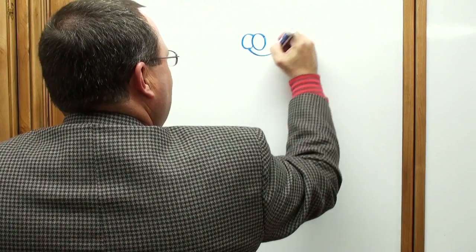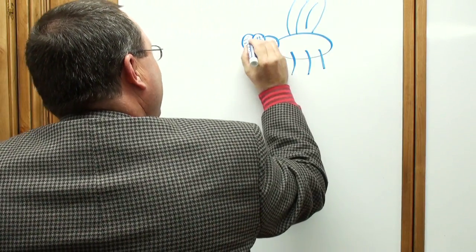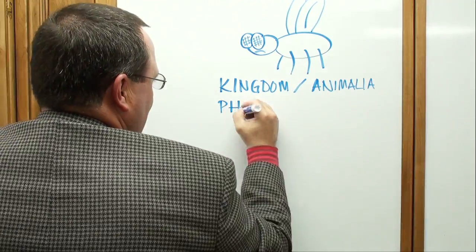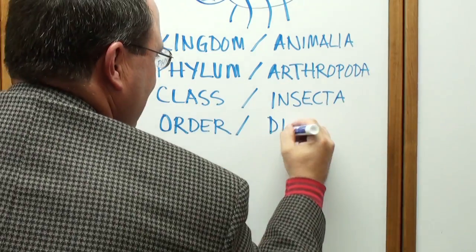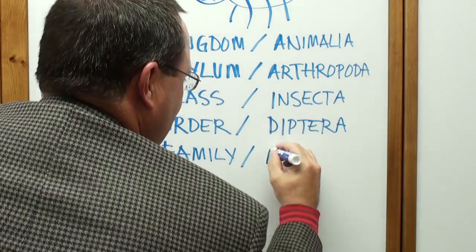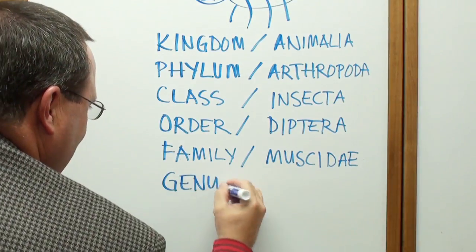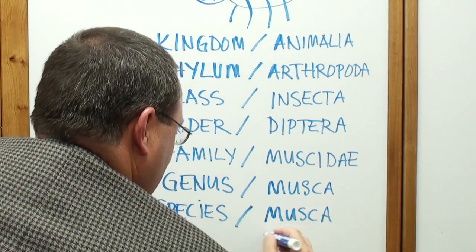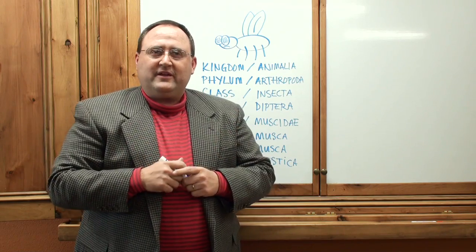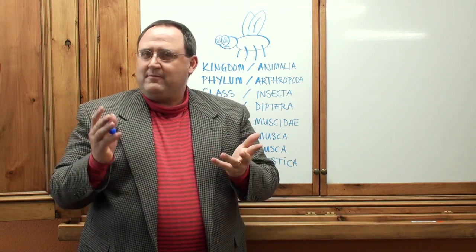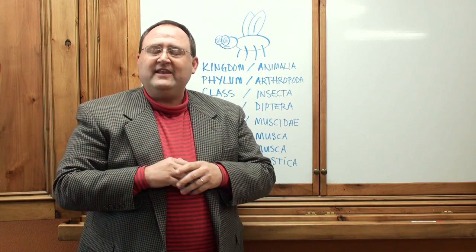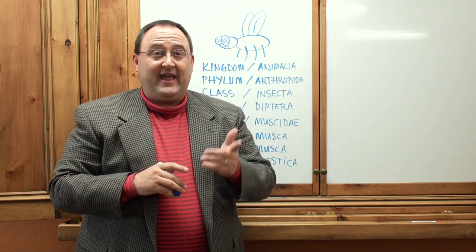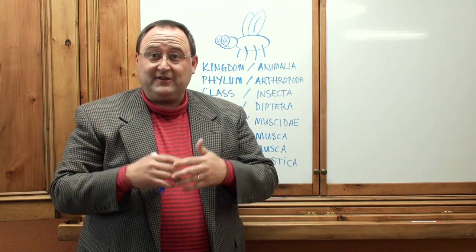Humans have always felt the need to categorize things. For instance, there are a series of complicated classifications for the common housefly. Their kingdom is Animalia, phylum Arthropoda, class Insecta, order Diptera, family Muscidi, genus Musca, and species Musca domestica. A lot of work went into classifying and categorizing an insect that for the most part is annoying and worthless. So you would think that an equal amount of time would be spent on categorizing something as important and beneficial as plastic.